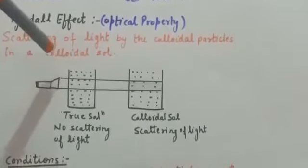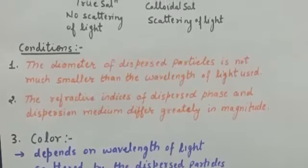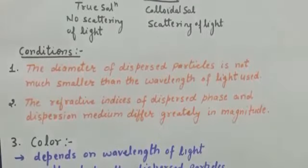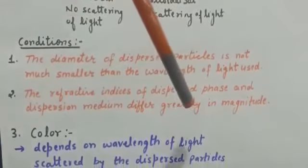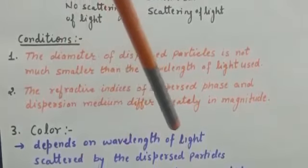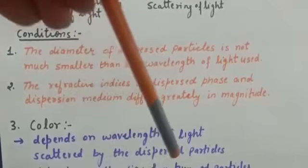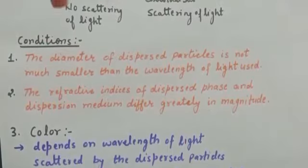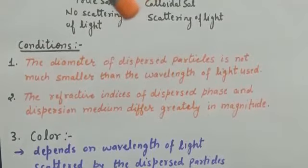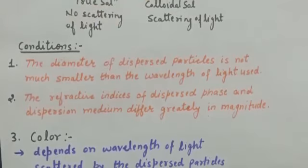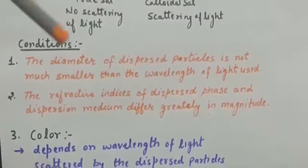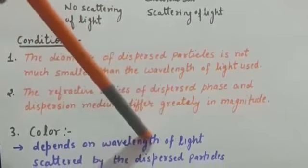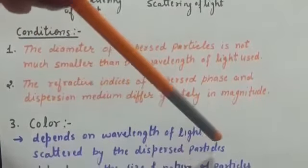The next property is the color of the colloidal solution. The color depends on the wavelength of light scattered by the dispersed particles, which further depends on the size and nature of the particles. For example, the finest gold sol is red in color, and as the particle size increases it appears purple, then blue, and finally golden.